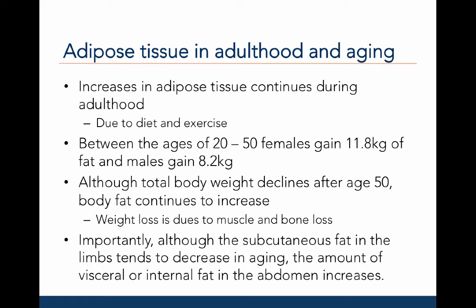Importantly, although subcutaneous fat in the limbs tends to decrease in aging, the amount of visceral or internal fat in the abdomen increases. And as we've mentioned in a previous slide, visceral fat is a risk factor for cardiometabolic disease.